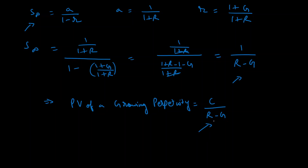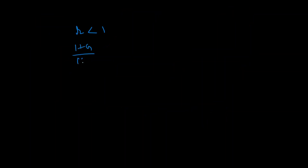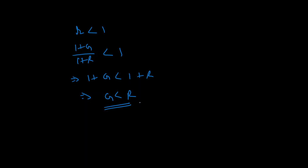In the last video we talked about how the discount rate has to be greater than the growth rate, that is R has to be greater than g. Where does that come from? It comes from the infinite GP sum formula a/(1 - r), which requires the common ratio to be less than one. Our common ratio is (1+g)/(1+R), and this has to be less than one. Multiplying both sides by (1+R), we get 1+g < 1+R, or g < R. Now you have a better understanding of where this condition comes from and why the present value is seen as negative when g is greater than R.